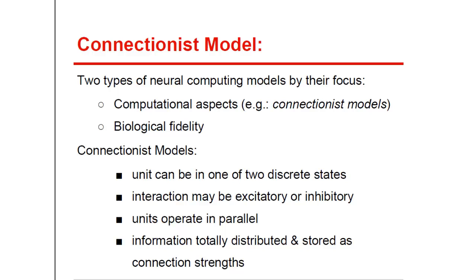What are connectionist models? Well, they can be analogous to neural networks in the human brain. The typical characteristics of a connectionist model are as follows. Each unit can be in one of two discrete states — for example, firing and non-firing modes of a neuron in the human brain. The interaction between units and neighbors may be excitatory or inhibitory. Units operate in parallel, simultaneously trying to adjust states to those of neighbors. Lastly, information is thoroughly distributed and stored in connectionist networks.